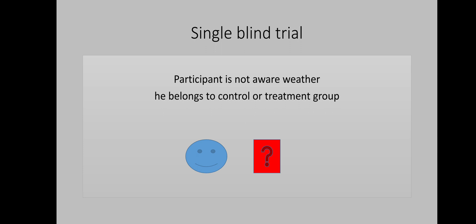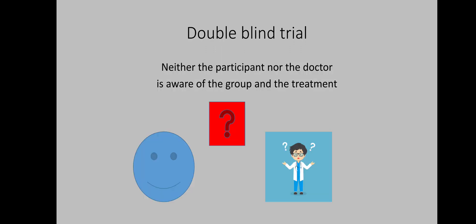Single blind trials are those in which the participants are not aware whether they belong to the control or treatment group. Double blind trials are those in which neither the participant nor the doctor who is actively doing the research is aware of the group and the treatment. This means the doctor does not know whether the patient belongs to the treatment or control group, nor whether the treatment given is the actual drug or the placebo.